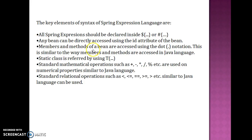Members and methods of a bin are accessed using the dot notation. This is similar to the way members and methods are accessed in the Java language. A static class is referred by using T and you will have to write a parenthesis, something like that.